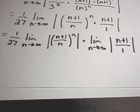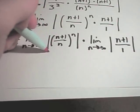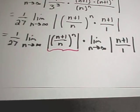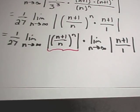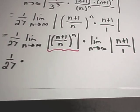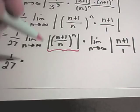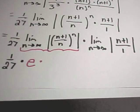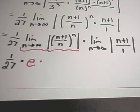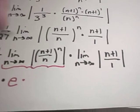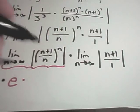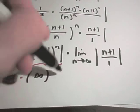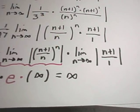This limit, n plus 1 over n raised to the n, this is one of those weird ones. It actually turns out that this whole limit turns out to be equal to the number e. Okay, so this whole limit turns out to be e. Which really doesn't matter too much because if you look at the limit as n goes to infinity of this n plus 1 over 1, that's going to be infinity. So it looks like our whole limit in this case is going to be infinity.